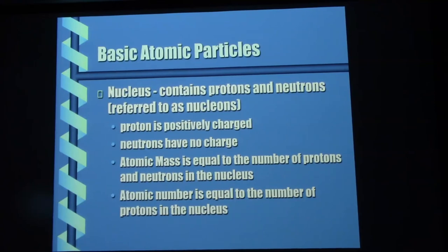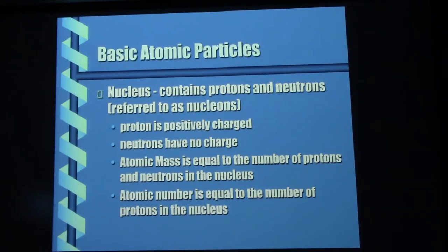Now, the basic atomic particles. In the nucleus we've got protons and neutrons. Protons are positively charged. Neutrons have no charge. Electrons have very small mass, but it just so happens that if you take a proton and an electron and add their mass values together, it's almost exactly the mass of a neutron. So you can think of a neutron as being a combination of a proton and an electron together. Since it's got a positive and a negative charge built in, it has no external charge — it's considered neutral.